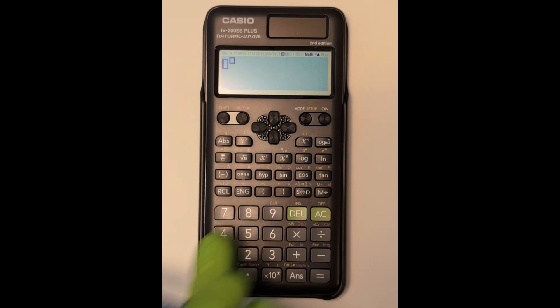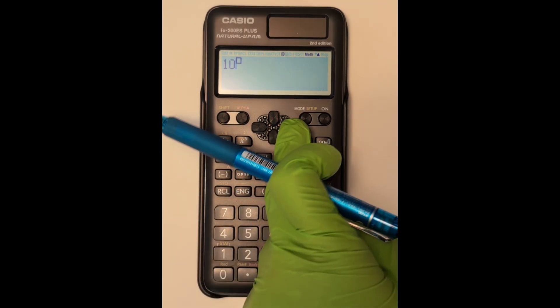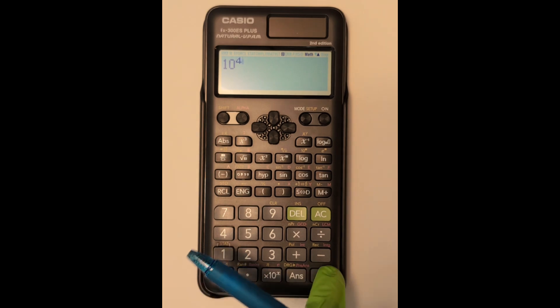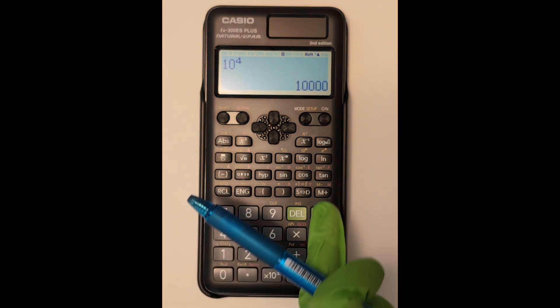You can also just hit the exponent button first, then enter your base number, the over arrow, and then put in your exponent.